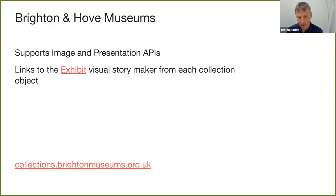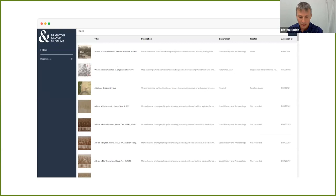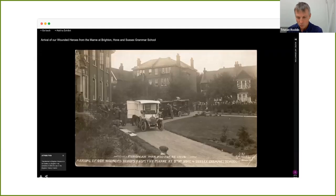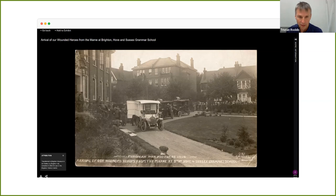A local example is Brighton & Hove Museum — a small museum that has added both the Image and Presentation APIs to their online collection. They're also doing an experimental feature to allow visitors to create their own zoomable stories based on collection objects. In the collection search results, clicking on each object takes you to the Universal Viewer, providing all the features to view high-resolution scanned images. In the top left there's a link that says 'add to exhibit.'